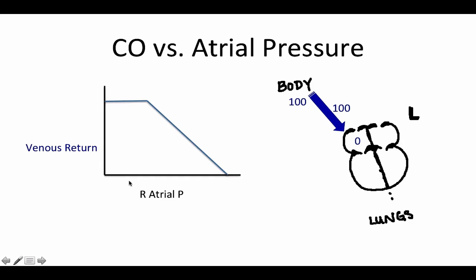Now let's increase the pressure of the atria — going from here to here, let's say that's about 50. Your body pressure or your venous pressure is going to stay the same. Now the pressure gradient difference is going to be 50, so now less blood is going to go from your veins back to your heart. That explains why this line decreases — with increased atrial pressure, you have decreased venous return.